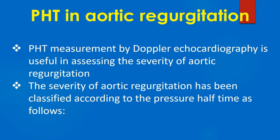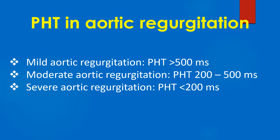PHT measurement by Doppler echocardiography is useful in assessing the severity of aortic regurgitation. The severity has been classified according to the pressure half time as follows: mild aortic regurgitation — PHT above 500 ms; moderate aortic regurgitation — PHT between 200 to 500 ms; severe aortic regurgitation — PHT less than 200 ms.